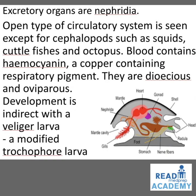Excretory organs are nephridia. Open type circulatory system is seen except for cephalopods such as squids, cuttlefishes, and octopus. Blood contains hemocyanin, a copper-containing respiratory pigment. They are dioecious and oviparous. Development is indirect with a veliger larva, a modified trochophore larva. You can see the head, radula leading into the stomach, nerve fibers, foot, gills, mantle cavity, nephridia (excretory organs), mantle covering the body, heart, gonads, and shell covering the entire soft body.